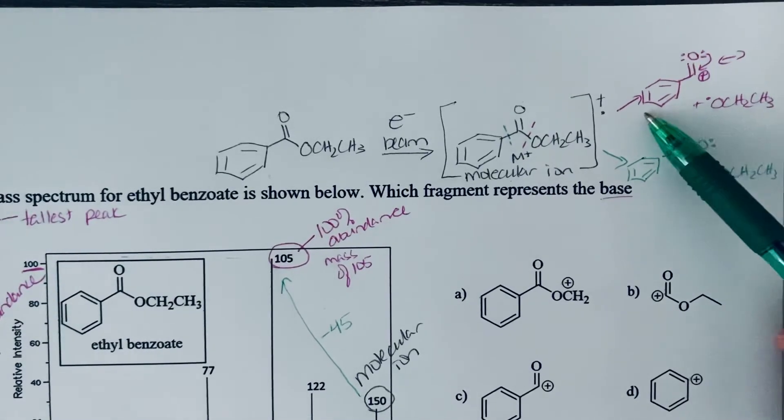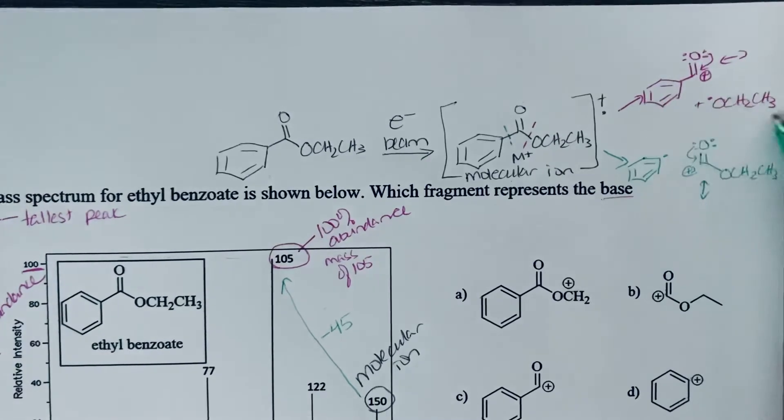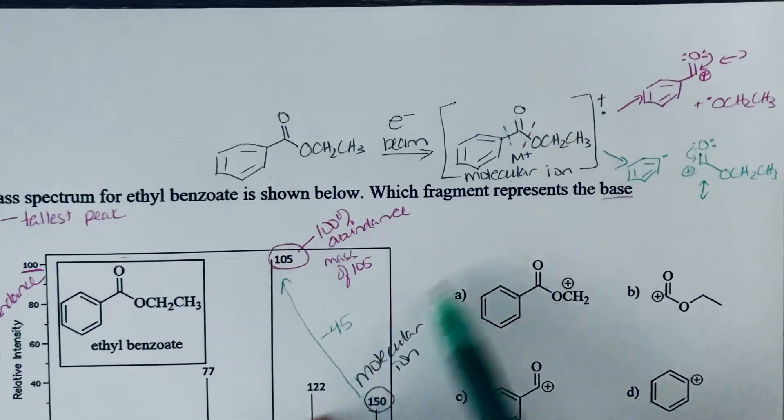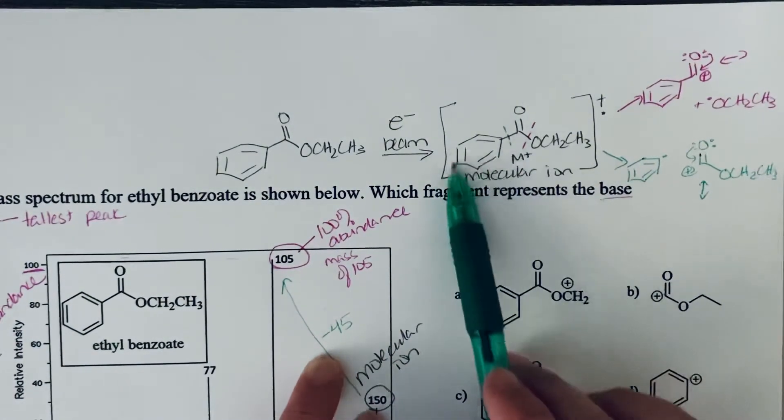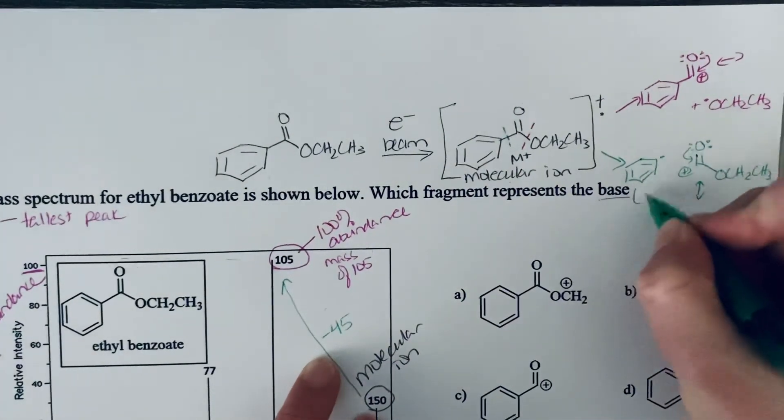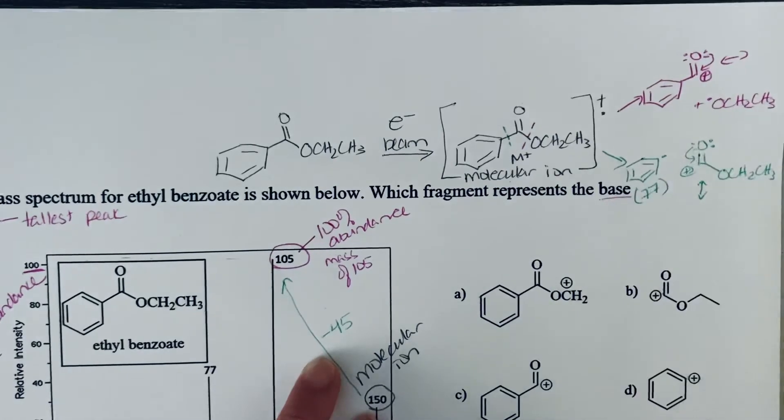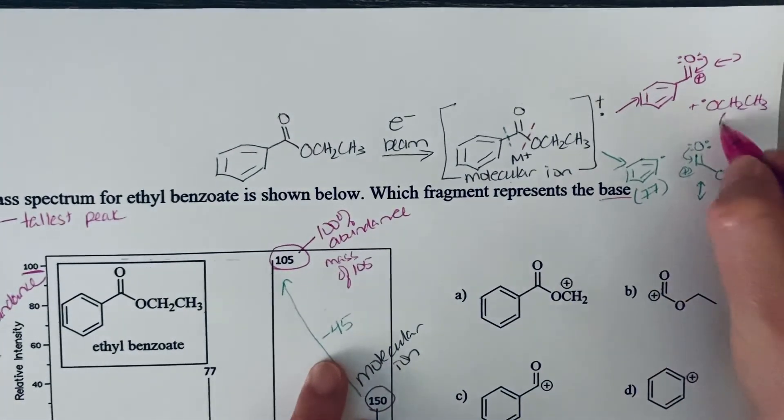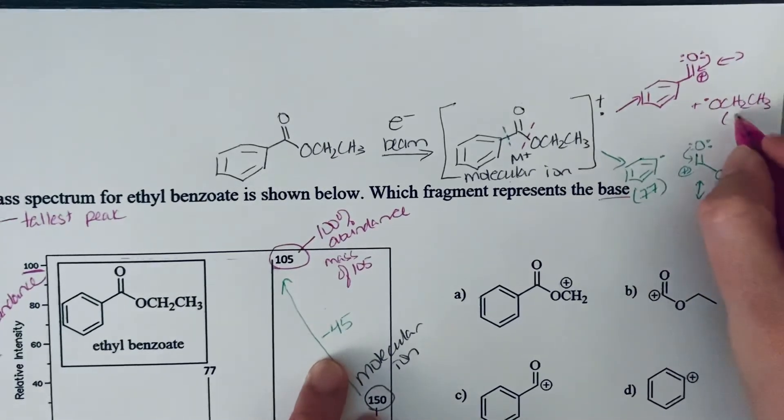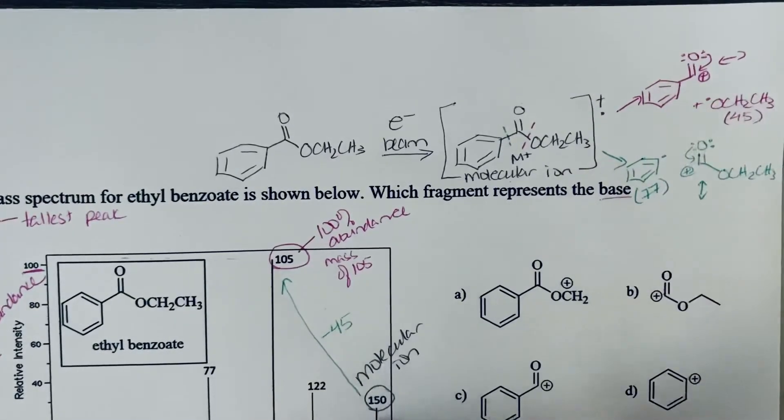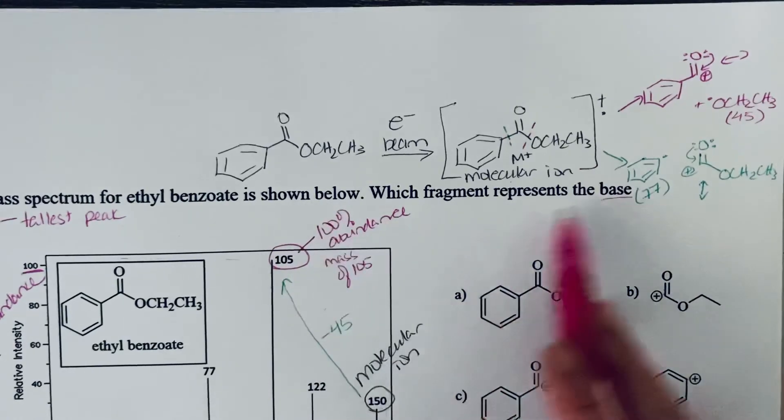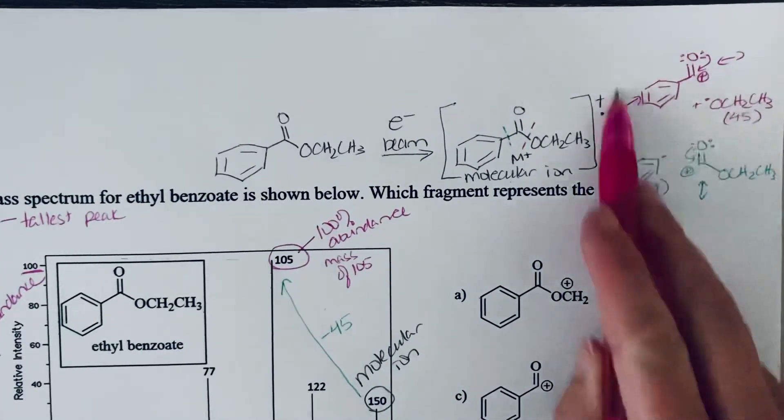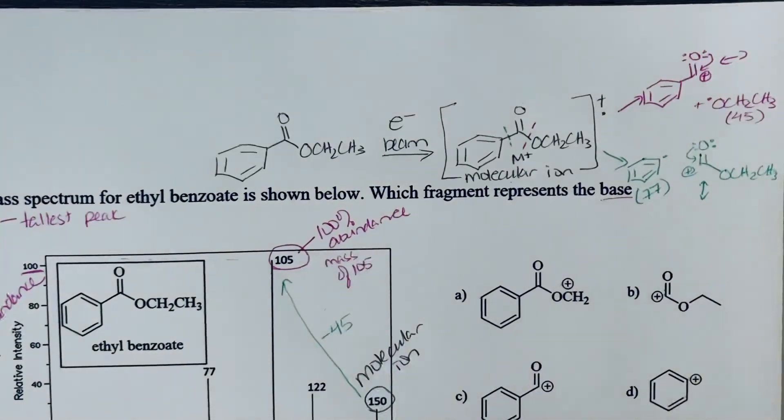You can add up the weight of the charged fragment or the weight of what's lost. Either way, you can get there. 45 is definitely not that benzene ring being lost. That whole benzene ring weighs 77, so that's not it. But this ethoxy group, if you add up the weight here, weighs 45. So what we're losing here in this major fragmentation pathway is the ethoxy group to get this as your stabilized cation. If you add up the weight of that, it weighs 105.